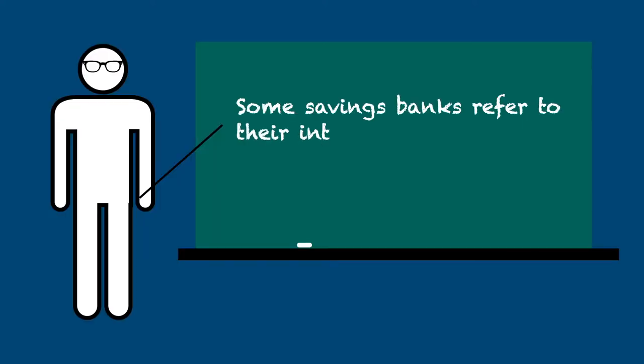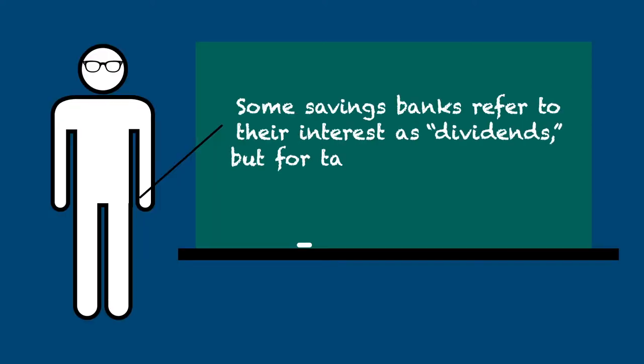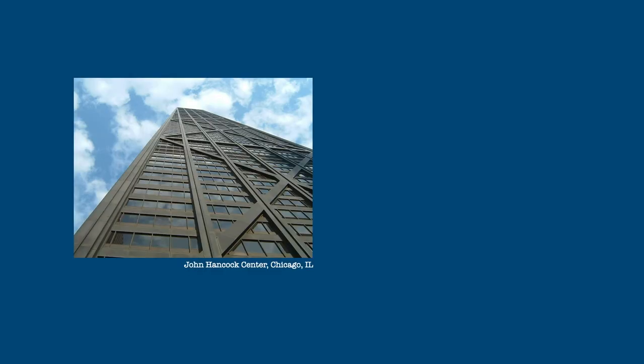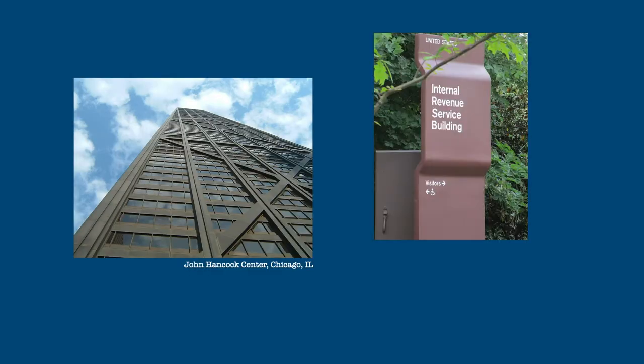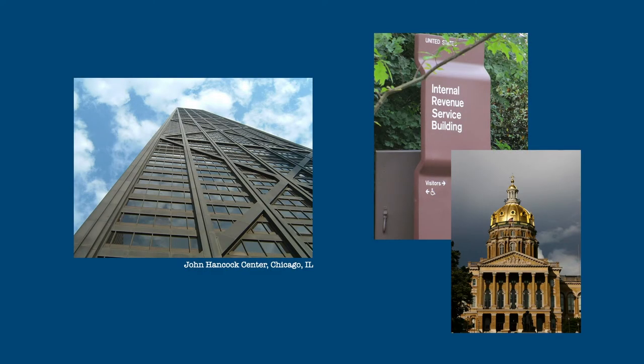If you have an interest-bearing account at a mutual savings bank, the interest you receive is sometimes referred to as dividends. Whatever the bank calls it, what they're paying you is interest and is treated that way on your tax return. You may also receive taxable interest from a life insurance company, or even from the government itself if it pays your tax refund late.